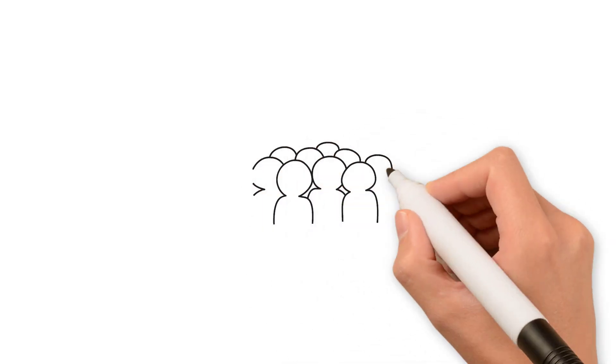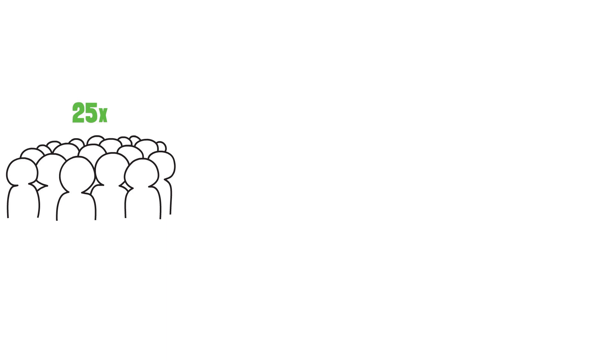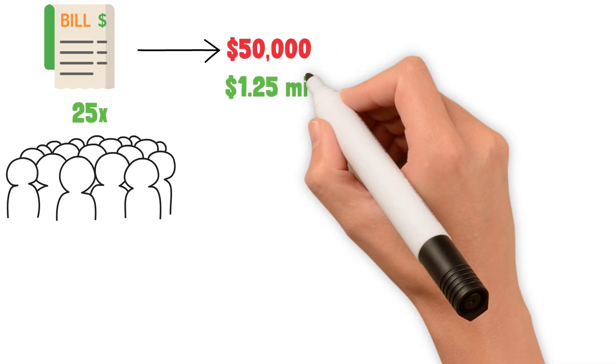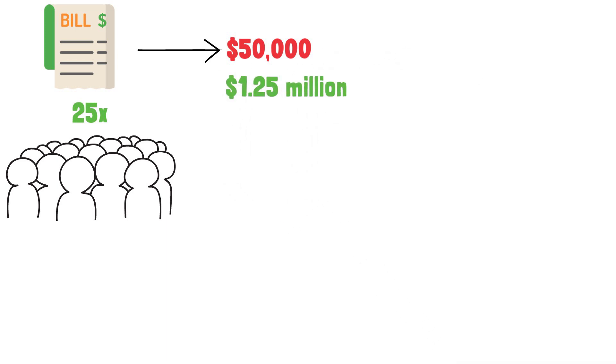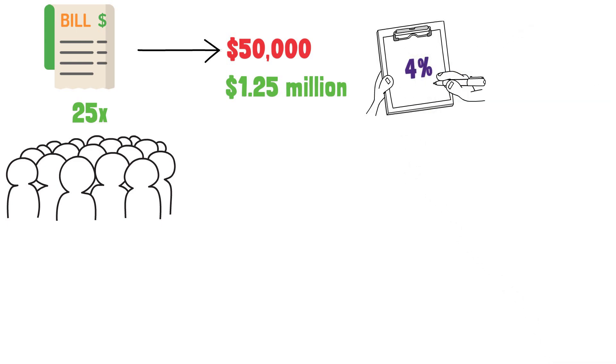Many followers of the FIRE movement seek to save around 25 times their expected annual expenses. For example, if you anticipate your annual expenses to be $50,000, then you'd be looking to save $1.25 million invested. Then, utilizing the 4% rule, we'll explain that a little later, you could safely withdraw $50,000 every year without touching the principal amount invested.